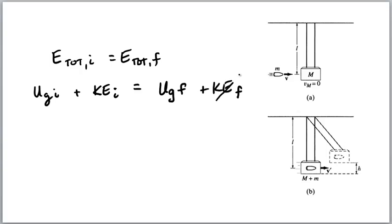potential energy gravitational initial plus kinetic energy initial equals gravitational potential energy final plus kinetic energy final. Now, the kinetic energy final is zero because it's coming to a stop. We're going to call this the zero level, so we know that potential energy gravitational initial is zero. So, the kinetic energy of this combined system,